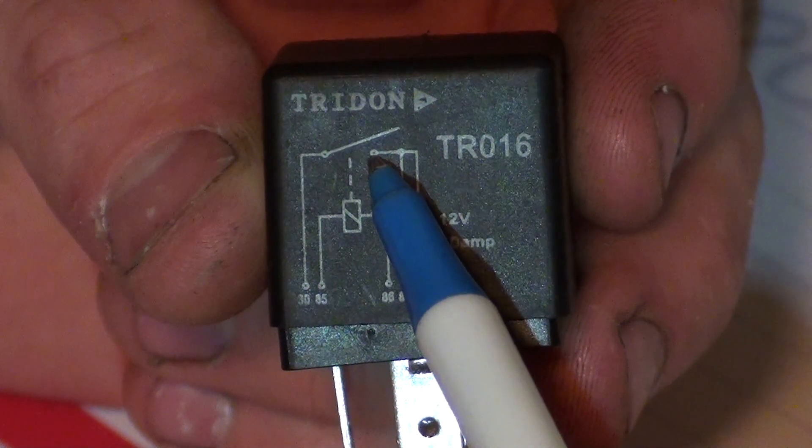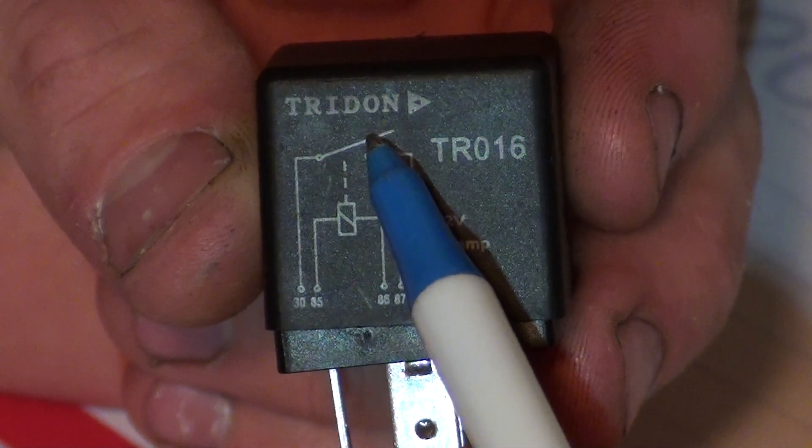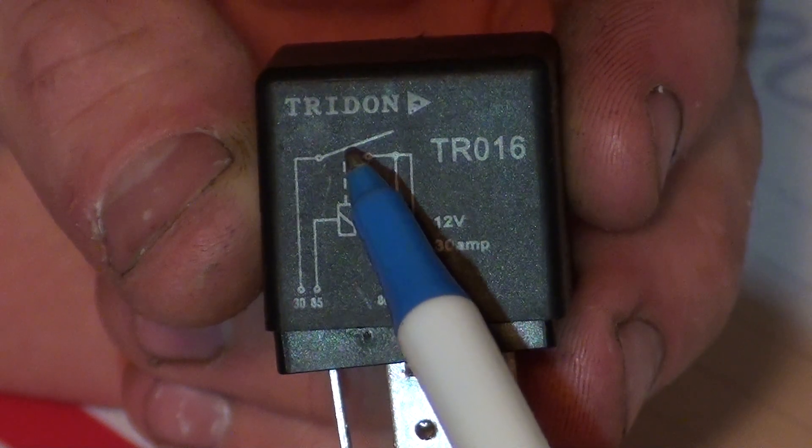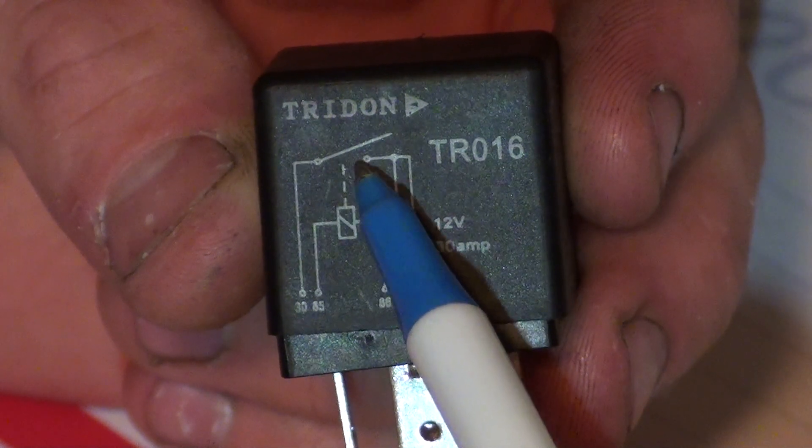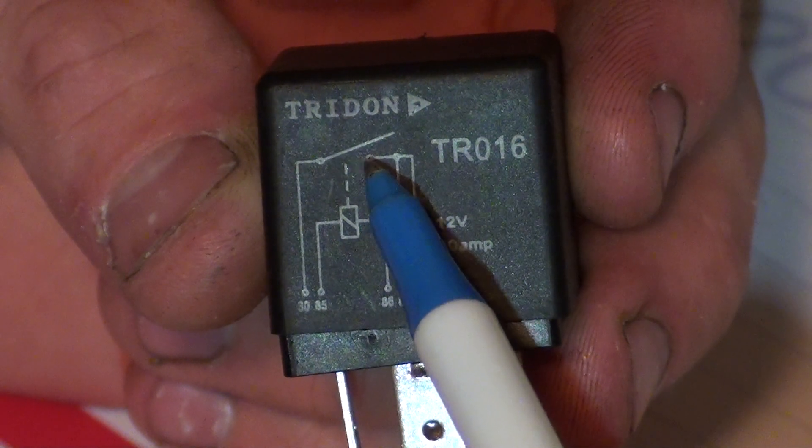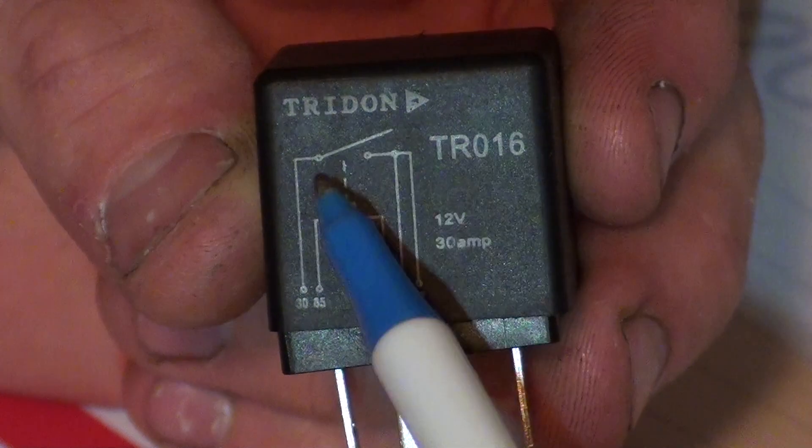If that switch was closed, and there was a dot here to indicate a terminal, that would be a normally closed relay. And then there's also changeover relays which are slightly different again, which would have two terminals either side.